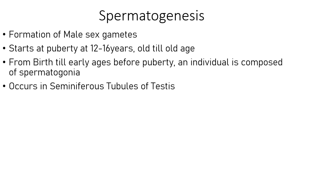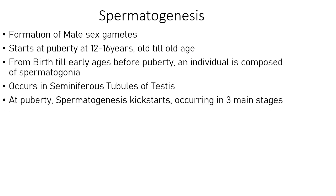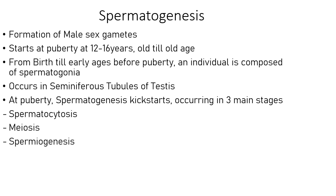Spermatogenesis occurs in the seminiferous tubules of the testis. At puberty the male has the scrotum and testis, and the testis has seminiferous tubules — that is where production of sperms occurs. At puberty when spermatogenesis kicks off, it occurs in three main stages.